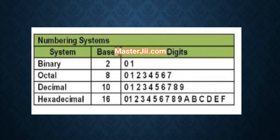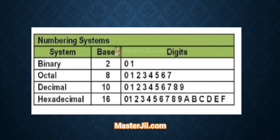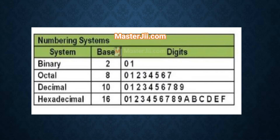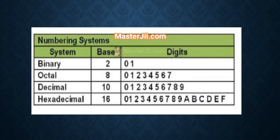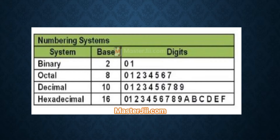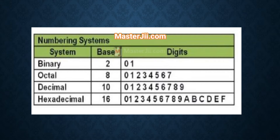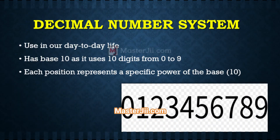The base of the binary number system is 2 and its digits include 0 and 1. The octal number system has a base of 8 and its digits include 0 to 7. The decimal number system has a base of 10 and its digits include 0 to 9. For the hexadecimal number system, digits 0 to 9 are straightforward, but 10, 11, 12, 13, 14, and 15 are represented by special characters: A, B, C, D, E, F — where A is 10, B is 11, and so on.